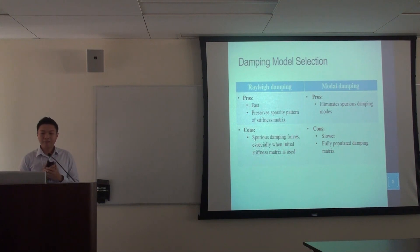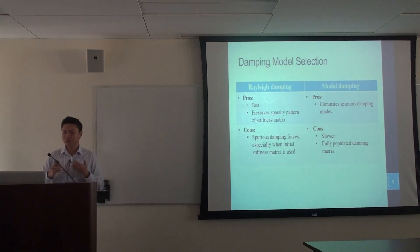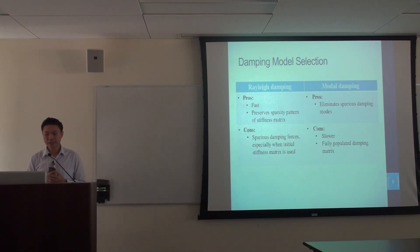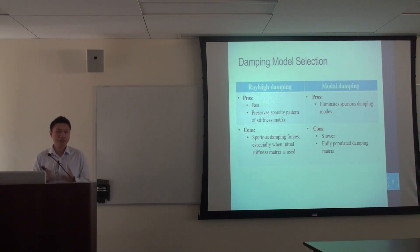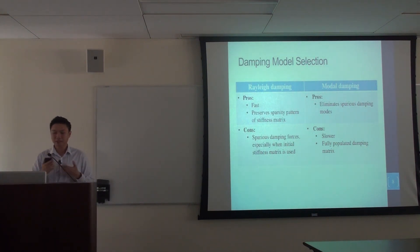We also looked into the damping model selection, focusing on two most common damping models: Rayleigh damping and modal damping. Rayleigh damping is relatively faster because it preserves the sparsity pattern of the stiffness matrix, but sometimes it may lead to spurious damping forces, especially when the initial stiffness matrix is used. On the other hand, modal damping eliminates those spurious damping modes, but they are slower because the damping matrix is fully populated.